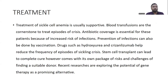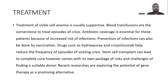Coming to treatment, management of sickle cell anemia is usually supportive. Blood transfusions are the cornerstone to treat episodes of crisis. Antibiotic coverage is essential for these patients due to increased risk of infections, and prevention can also be achieved through vaccination. Drugs such as hydroxyurea and crizanlizumab help reduce the frequency of sickling crises. Stem cell transplants can lead to complete cure; however, they come with risks and challenges of finding a suitable donor. Recent research is also exploring gene therapy as a promising alternative.